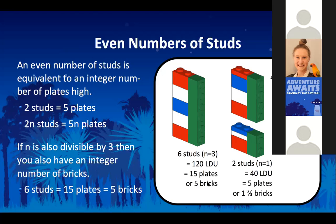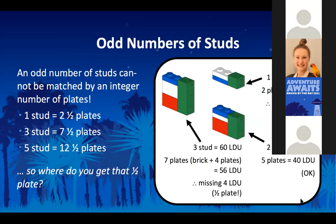You can forget about LDU if you are able to keep these numbers in your head, but there are situations where LDU does help you resolve questions about why something doesn't fit where you think it will. If there's an odd number of studs, it will never work because you need an even number of studs for the stack of plates to match. A single stud wide is two and a half plates thick, three studs is seven and a half plates, five studs is twelve and a half, et cetera.